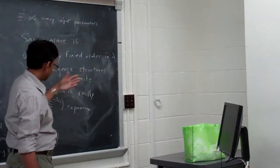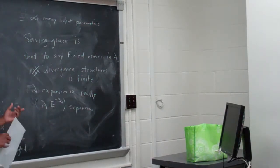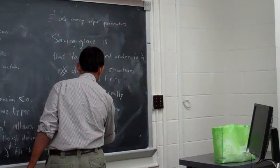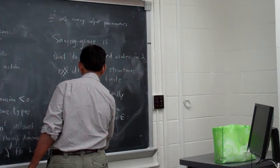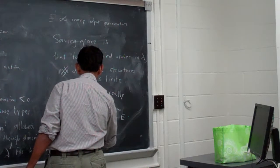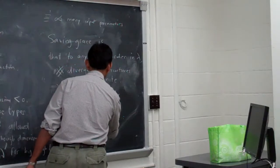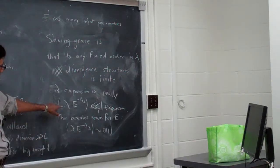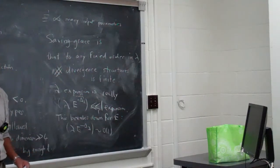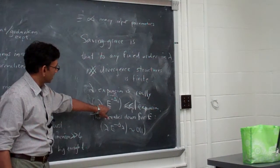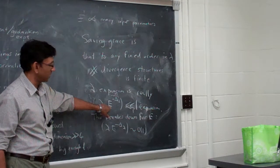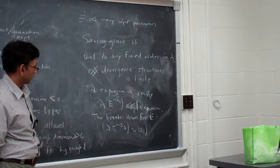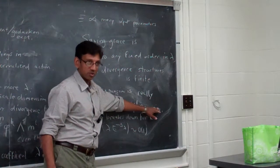You're expanding in lambda*E^(−delta_lambda), chosen so that this combination is dimensionless. This expansion breaks down for energies such that lambda * E^(−delta_lambda) ~ 1. Notice that minus delta_lambda is positive by definition of the non-renormalizable case, so what you're really doing is a low-energy expansion — like G_Fermi times E^2, or G_Newton times E^2.